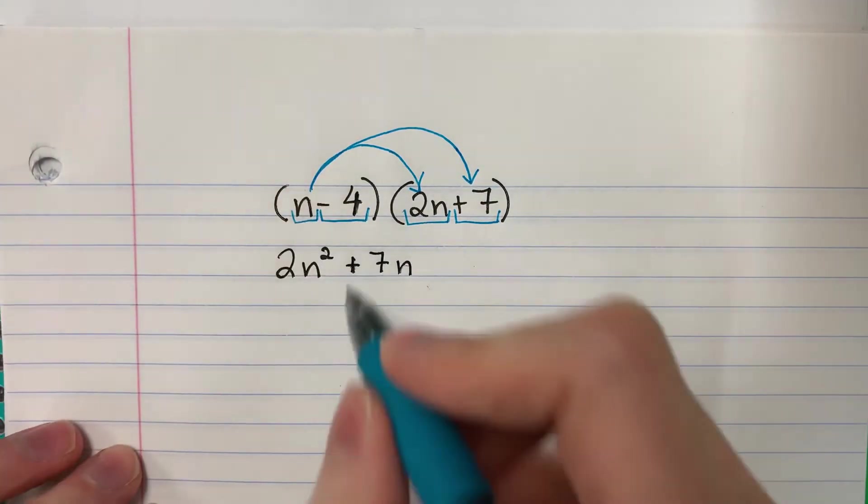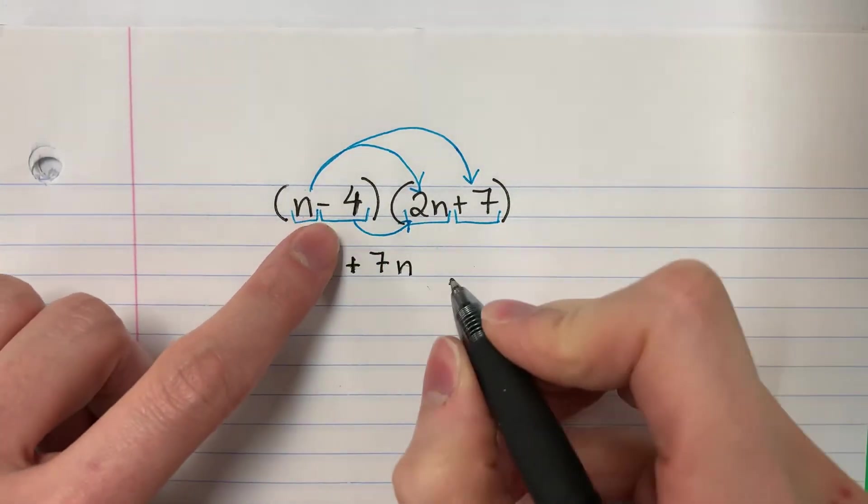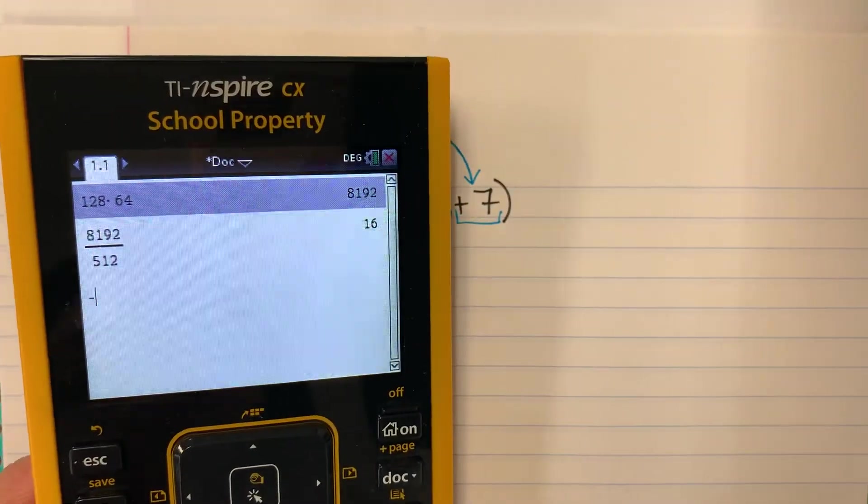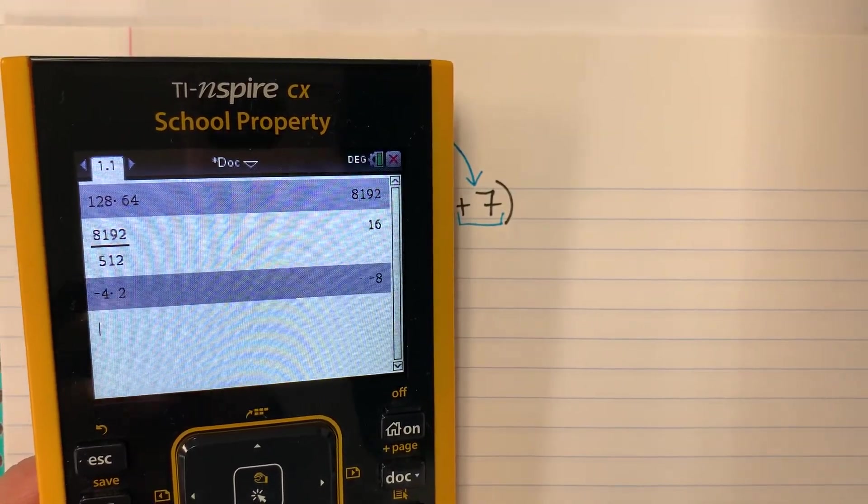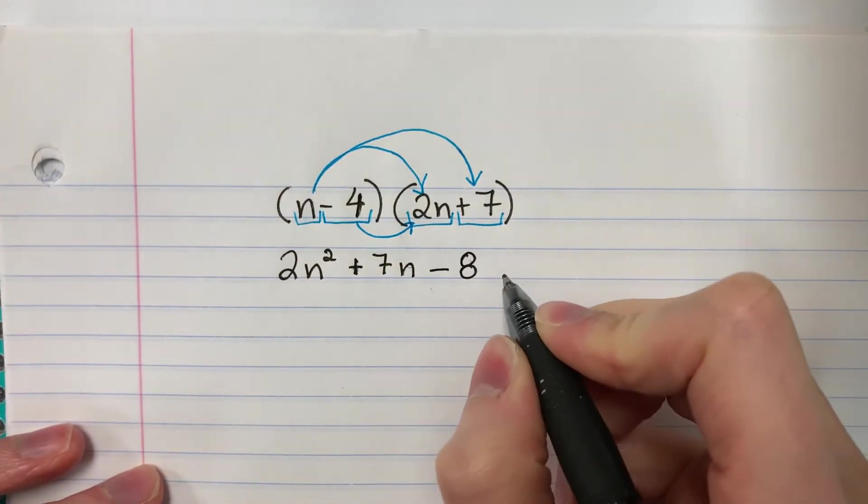Negative 4 times 2n. Negativo 4 por 2n. Negative 4 times 2. You can put that in the calculator if you want. Negative 4 times 2, that is negative 8. Negative 8. Copy n.